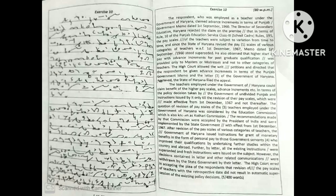The respondent, who was employed as a teacher under the Government of Haryana, claimed advance increments in terms of Punjab Government memo dated 1st September 1960. The Director of Secondary Education, Haryana, rejected the claim on the premise that in terms of Rule 10 of the Punjab Education Service Class Third School Cadre Rules 1955, the pay scales of the teachers were subject to variation from time to time, and since the State of Haryana revised the pay scales of various categories of teachers with effect from 1st December 1967,